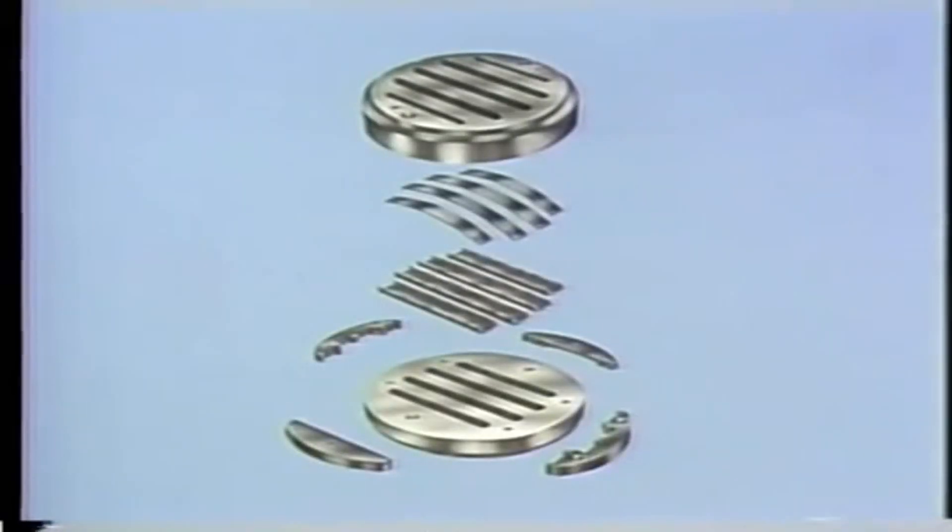A channel valve is made up of three basic components: a valve seat, a stop plate, and the movable parts, the channels. In addition, it has channel guides and leaf springs.